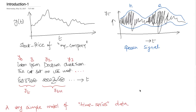In this video lecture I am going to talk about RNNs, which stands for Recurrent Neural Networks. RNNs are a type of deep learning neural network architecture suitable for processing sequences. A sequence is any ordered collection of numerical data.